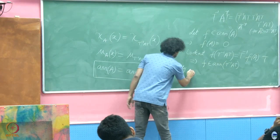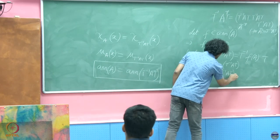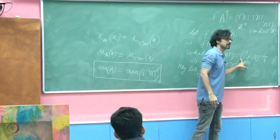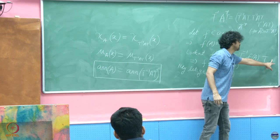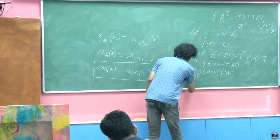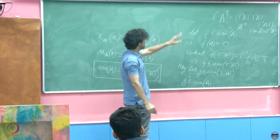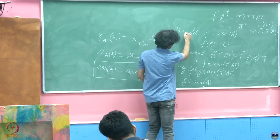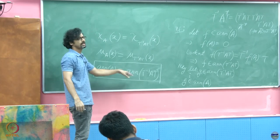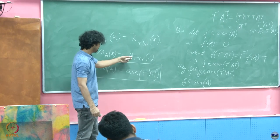Similarly — and I leave this as an exercise — let G belong to the annihilating ideal of T⁻¹AT. Since T is invertible, if G(T⁻¹AT) = 0, you can hit it with T on the left and T⁻¹ on the right to conclude G(A) = 0, so G belongs to the annihilating ideal of A. Therefore the two annihilating ideals are equal: the annihilating ideal of A equals the annihilating ideal of T⁻¹AT.